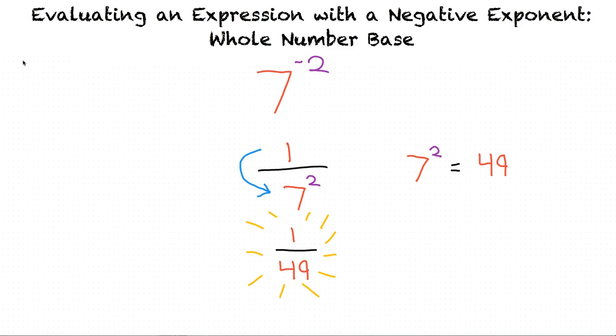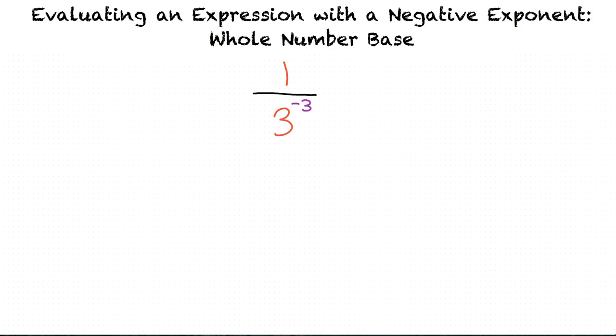Now that we have done an example, would you like to try and solve a problem with the number and exponent being in the denominator? Sure. I think I'm ready. Great. Your problem is 1 divided by 3 to the power of negative 3.